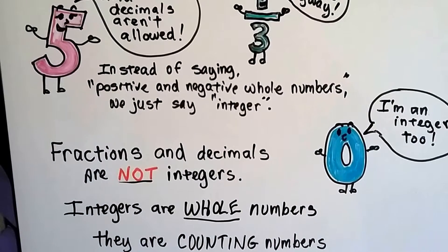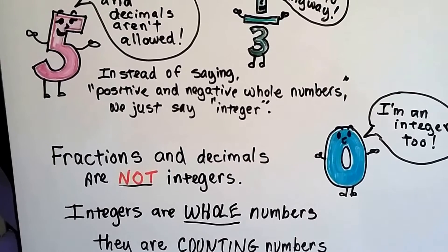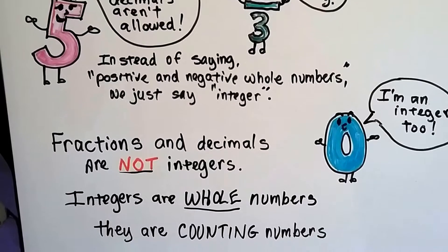Fractions and decimals are not integers. They have to be whole numbers. They're counting numbers.